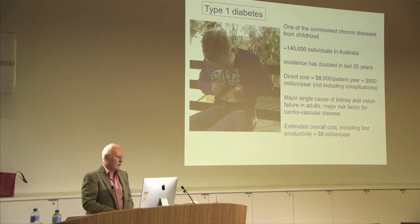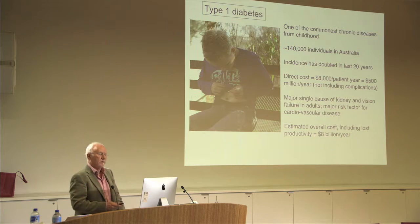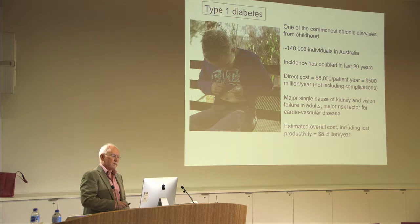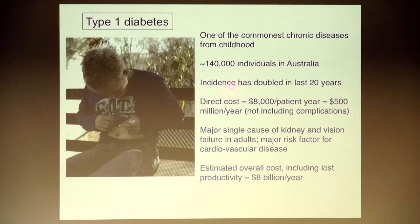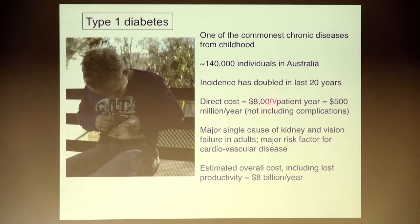Type 1 diabetes is one of the commonest chronic diseases from childhood — about 140,000 individuals in Australia. As mentioned, for this and other autoimmune diseases, the incidence has increased. In the case of type 1 diabetes, it has doubled in the last 20 years. It costs a lot to treat patients — about $8,000 a year, a total of $500 million, not including the longer-term complications.